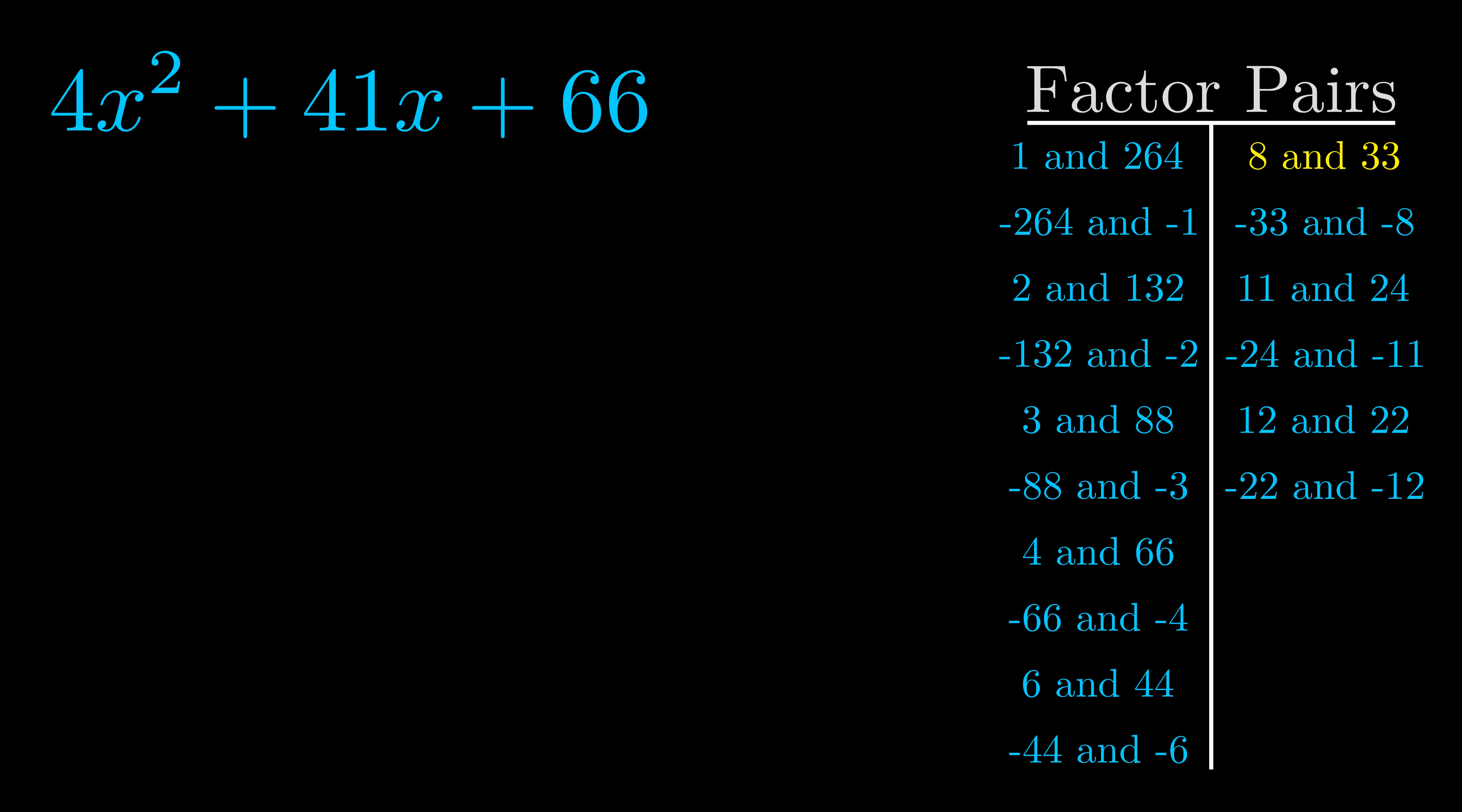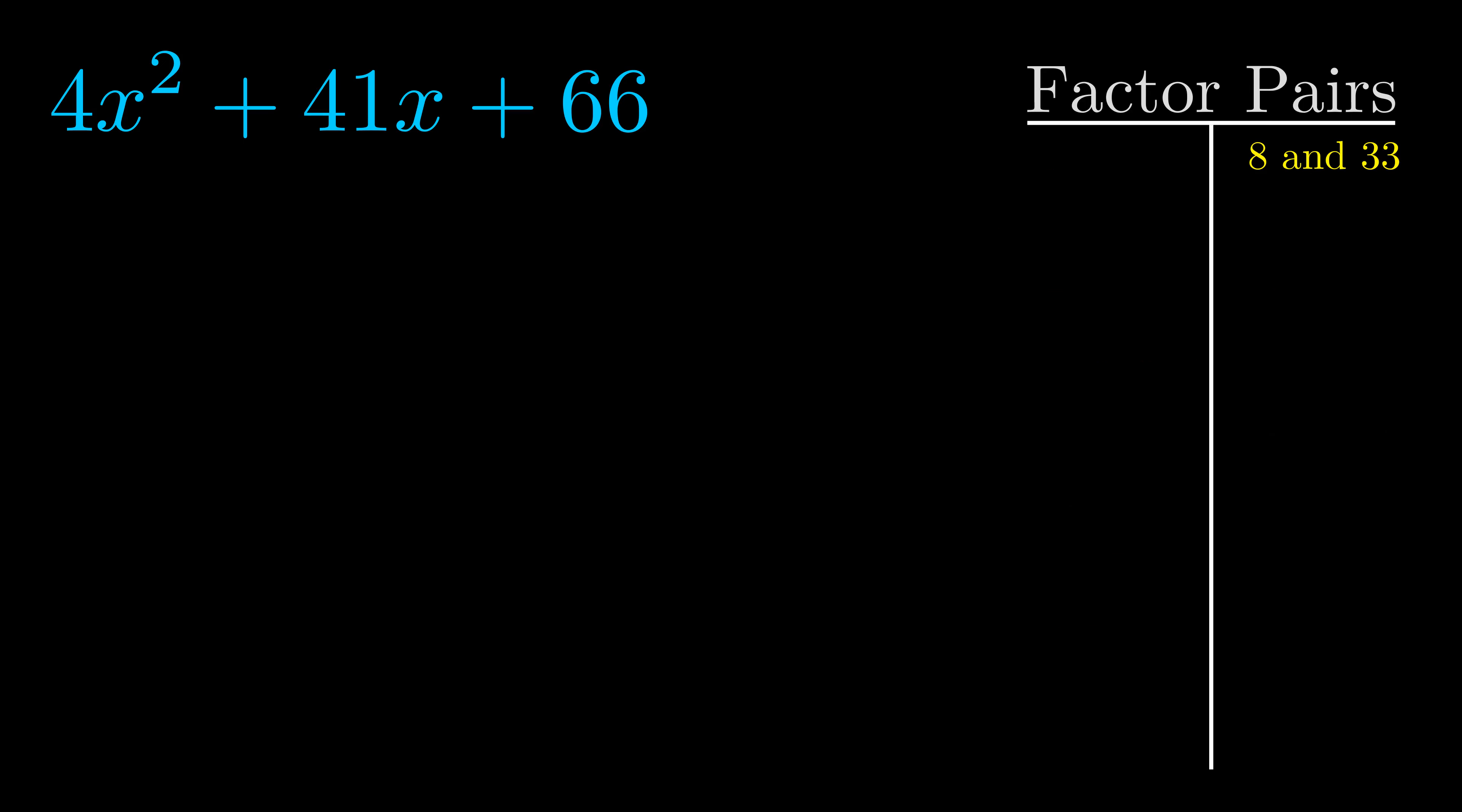And really this is the only factor pair that we need. Now once we have this factor pair what we want to do is we want to use it to split up the b value.